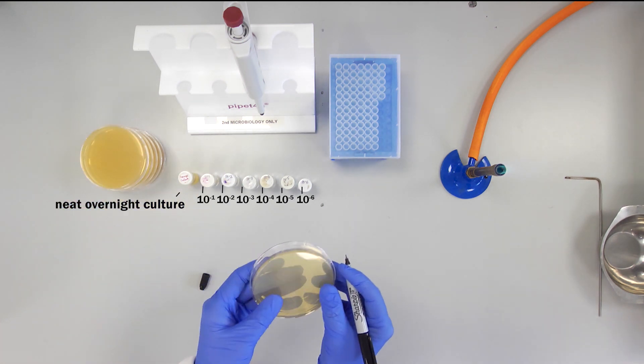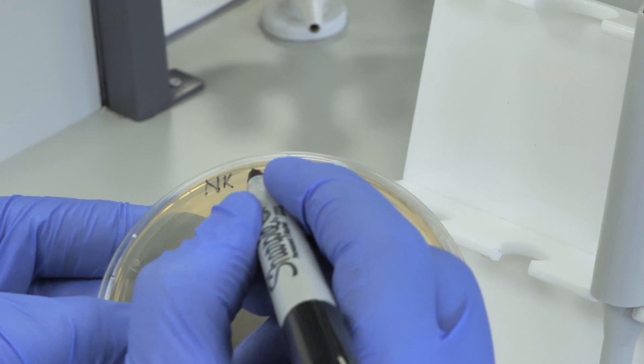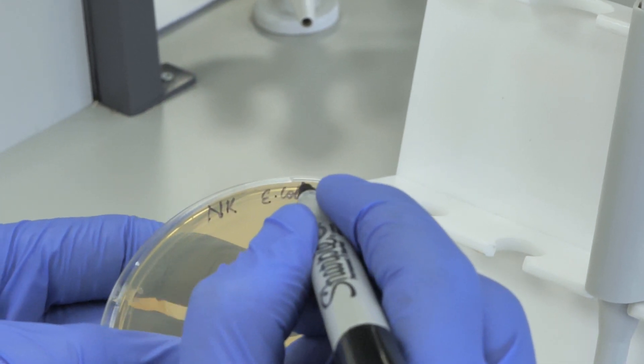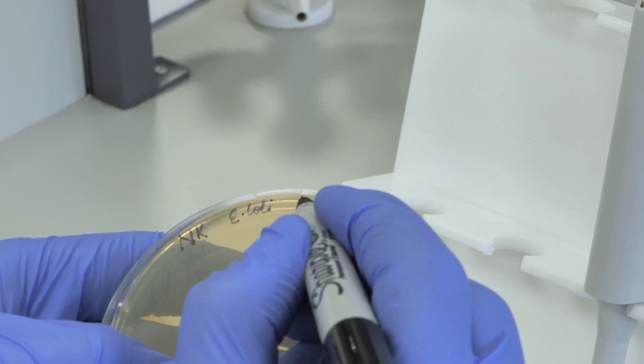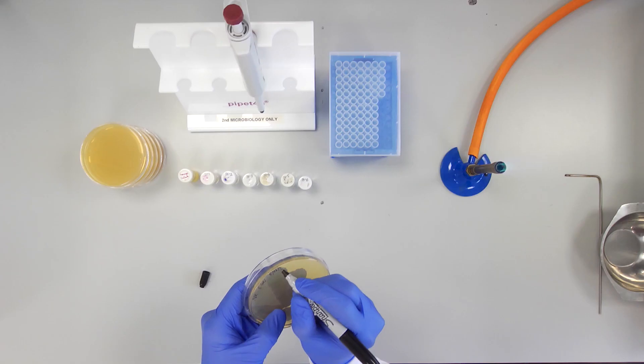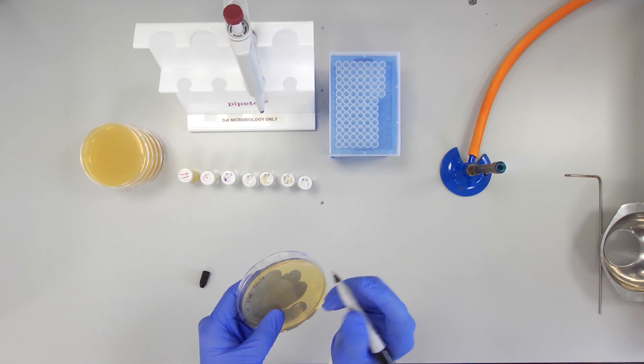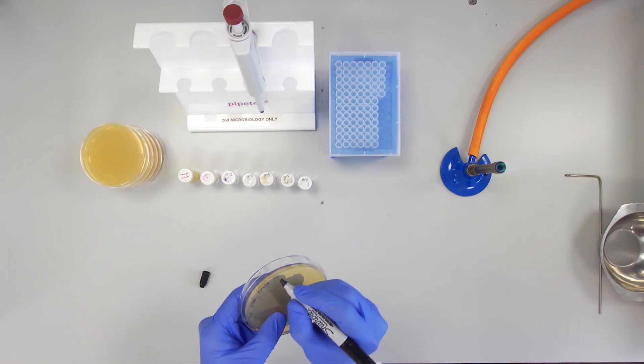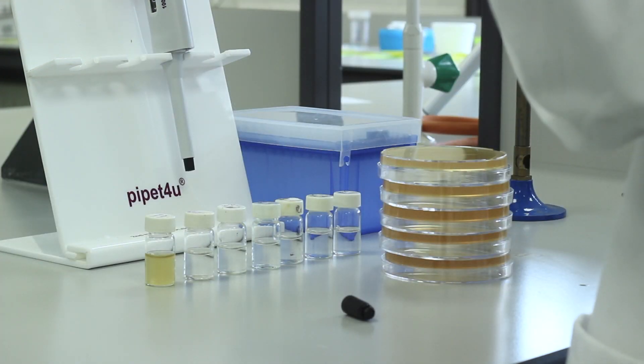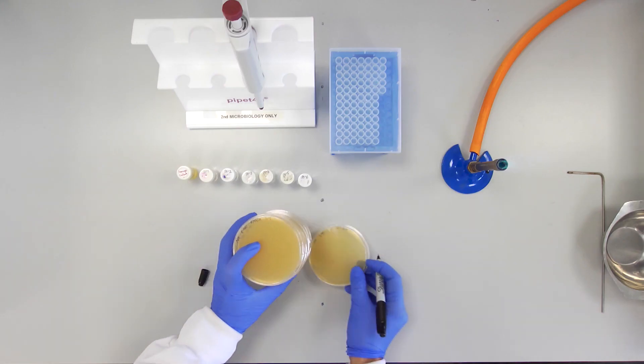Label the bottom of each plate with your name or initials, the dilutions from 10 to the minus 1 on the first plate to 10 to the minus 6 on the last, the name of the organism being tested, and the date. These plates can now be set aside.